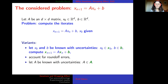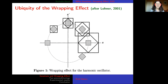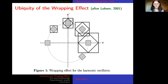When doing these computations you face the wrapping effect, as described by Loaner. You probably know this figure: you have a square, and each time you rotate it by one eighth of a turn. Your square has sides no longer parallel to the axes, so you must enclose it in a larger axis-aligned box, and then rotate again, getting an even larger box, and so on. Very quickly, what should be a small square becomes a large enclosing box.